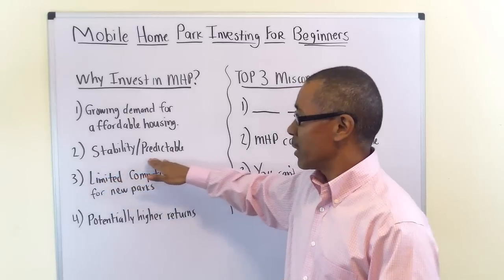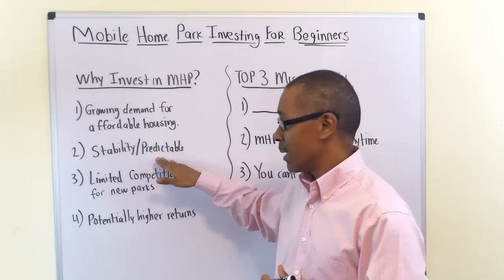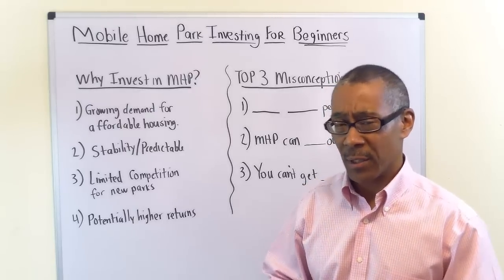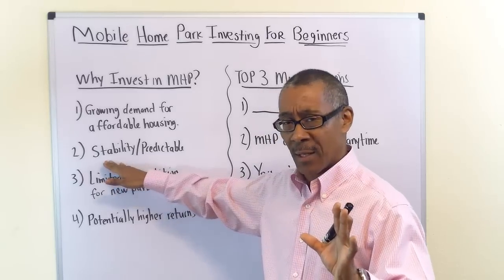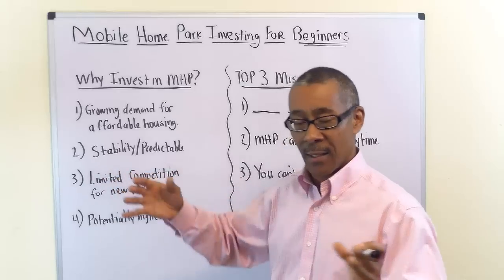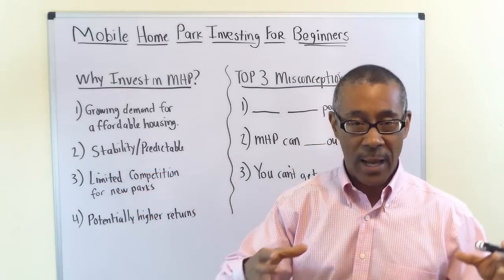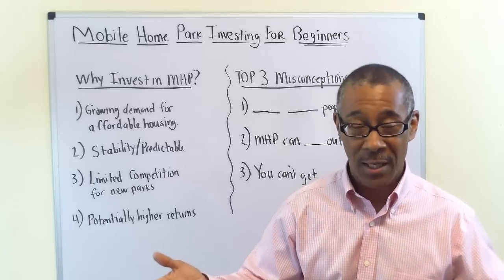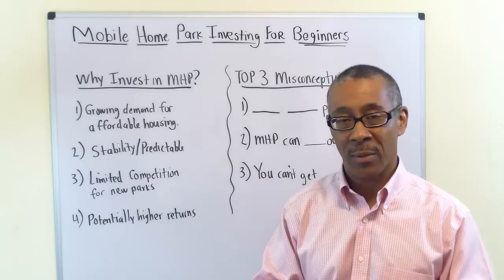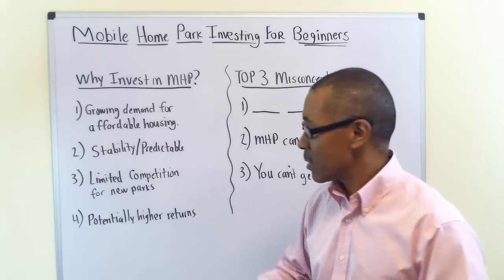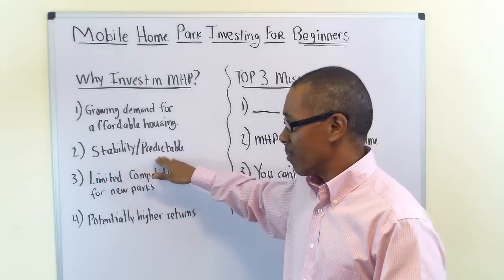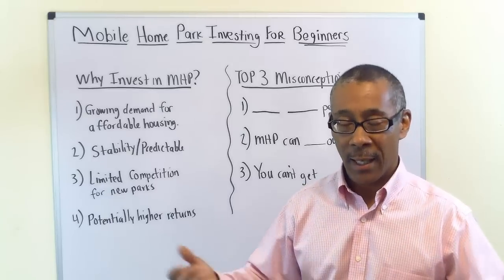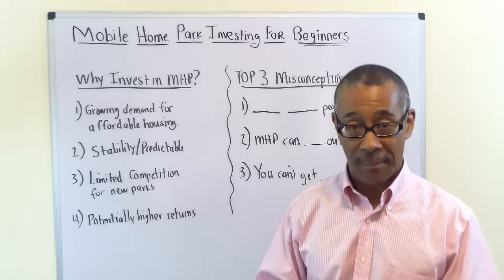Number two: stability and predictability. There's a misconception that people think mobile home park residents tend to move everywhere — they don't. When a mobile home is delivered to a lot many years ago, the majority are still there today — that's over 50%. It costs about $3,000 to move a mobile home from point A to point B, and the typical resident doesn't have that kind of money. It's a very stable, very predictable investment.